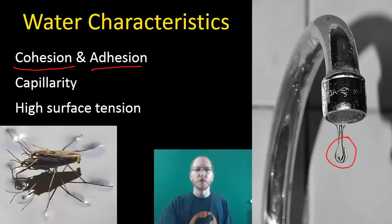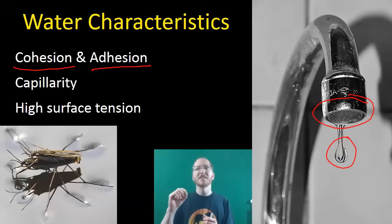You'll also see adhesion, which is water molecules sticking to other substances that are not water. In this case, you can see that it's clinging to this metal that's part of the faucet. You can also take a small water droplet and make it stick to a wall. That's adhesion, where water molecules, because they're polar, like to stick to other things, so long as those other things aren't non-polar. It's fairly easy to get water to stick to other stuff.